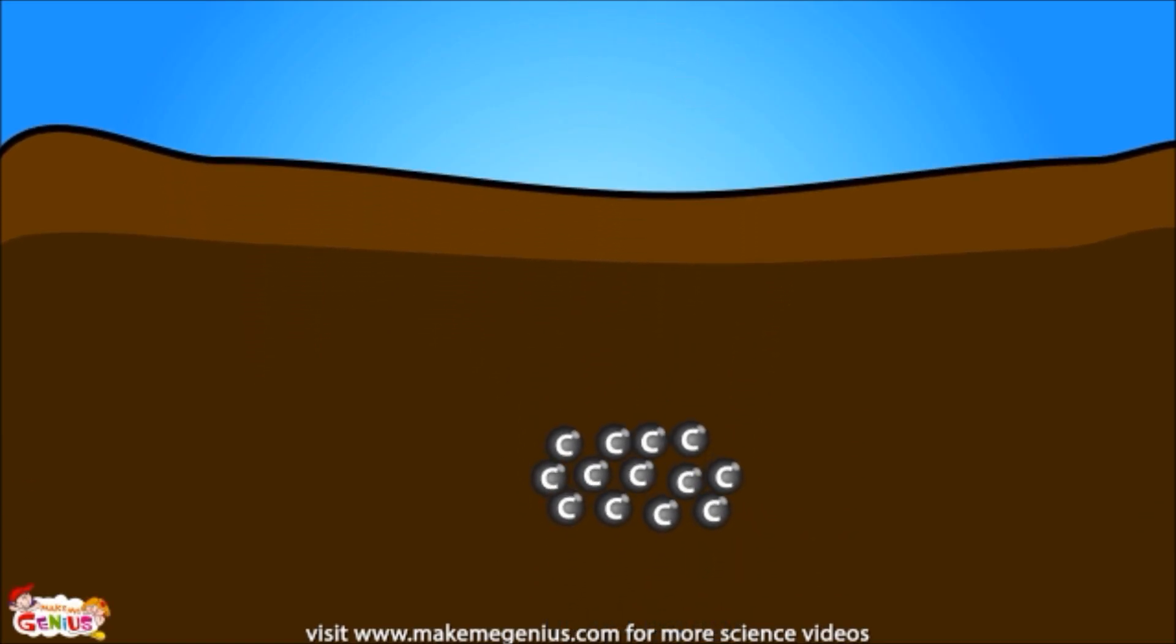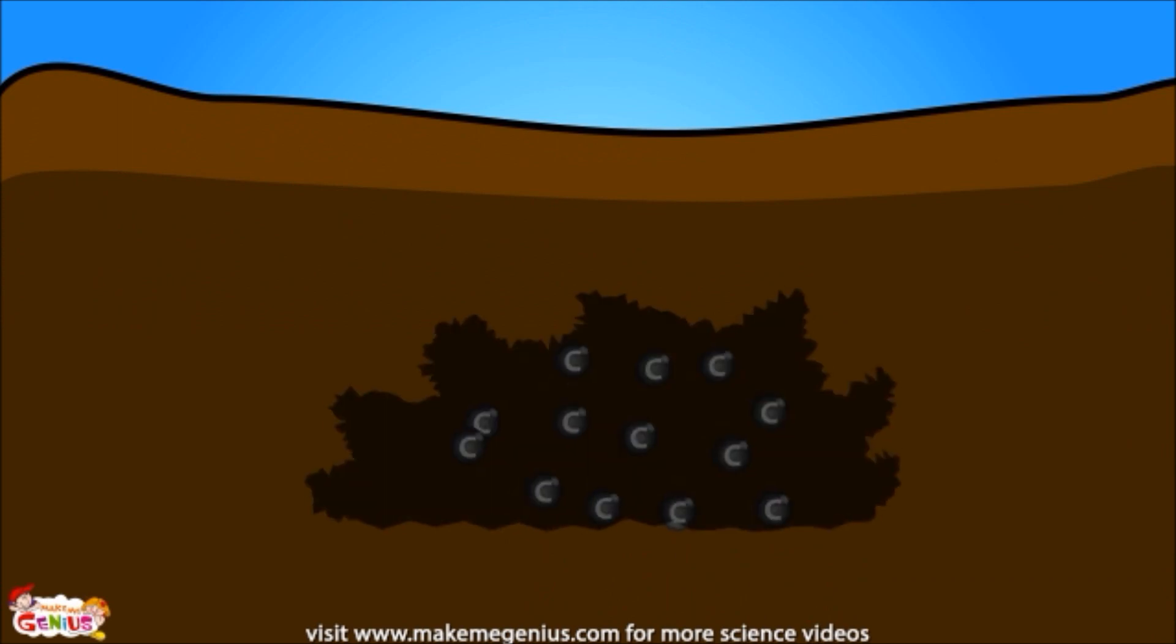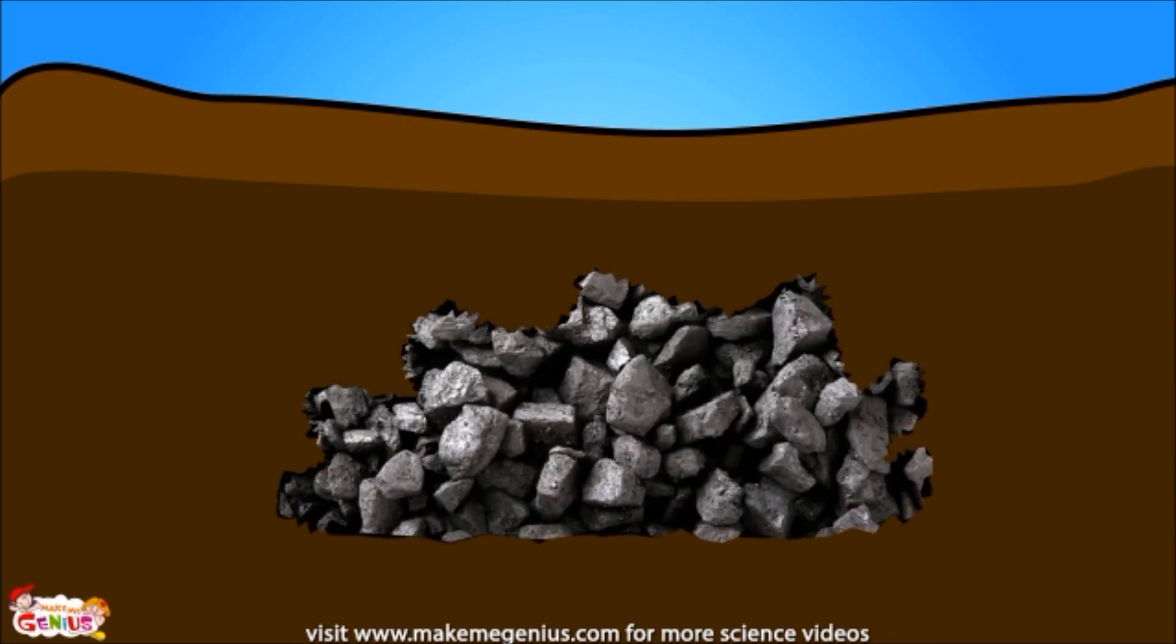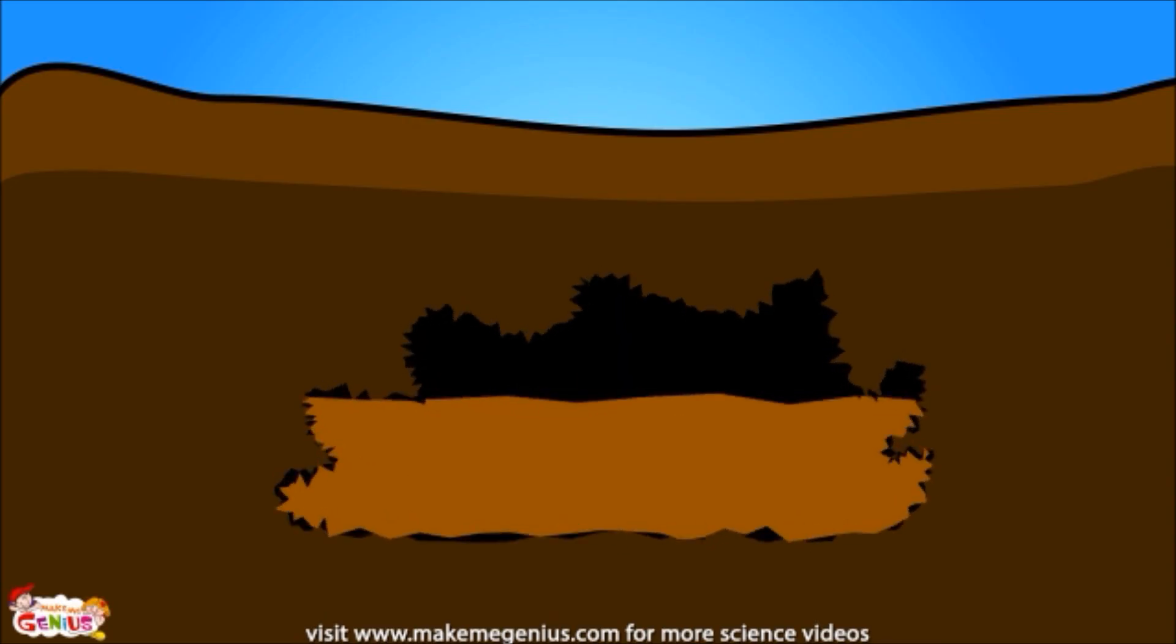And over millions of years, the trapped carbon changes shape. It can end up as a diamond, probably coal, or fossil fuels, such as petrol and diesel.